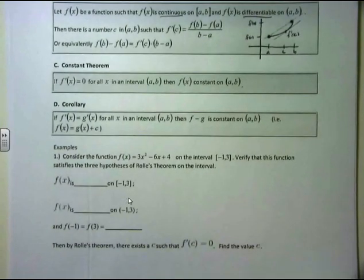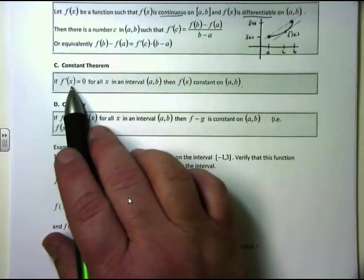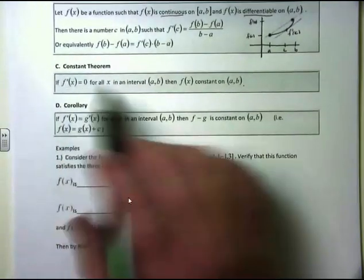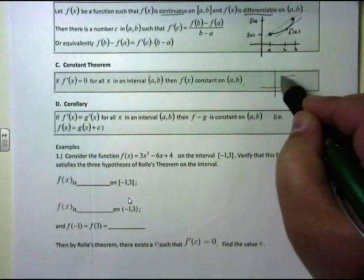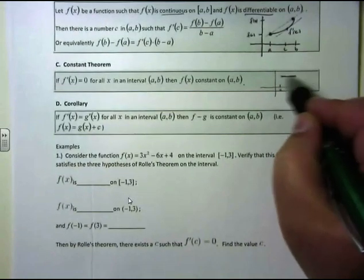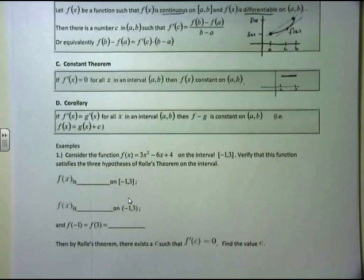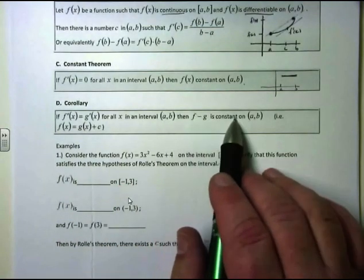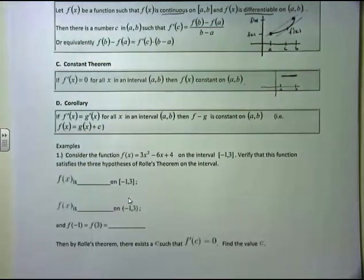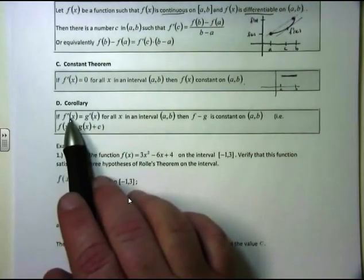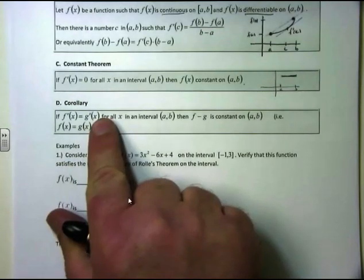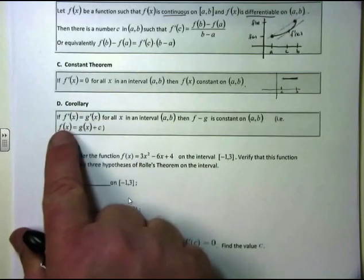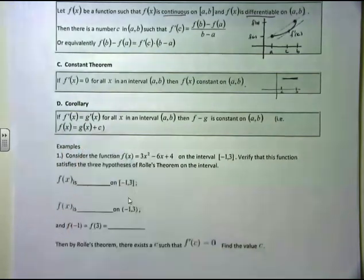The other classic theorem here is the constant theorem. It says that if f prime of x equals zero for all x in the interval a and b, then f of x is going to be constant on that interval. Because when the derivative equals zero at all points between a and b, that's called a constant function. A corollary to that is: if f prime of x equals g prime of x for all x in the interval between a and b, then f minus g is a constant on that interval. The idea is that if the derivatives of two functions are equal to each other, then the original functions are going to be equal to each other up to a constant — that's the plus c.